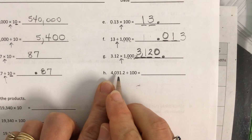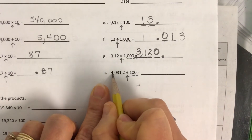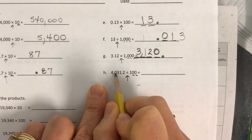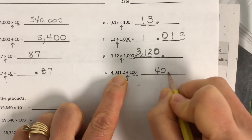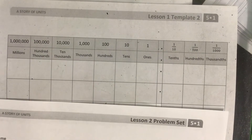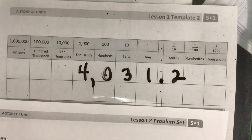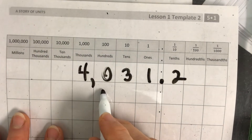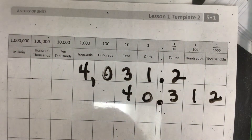Our number is 4,031 and 2 tenths, and it's getting smaller this time — the digits will be moving to the right two places because we're dividing by 100. The 4 moves two places smaller: to the hundreds, then to the tens place. The 0 is in the ones, then we have 3, 1, 2. All the digits follow behind it, and you can see the answer that way. Please feel free to use that chart.